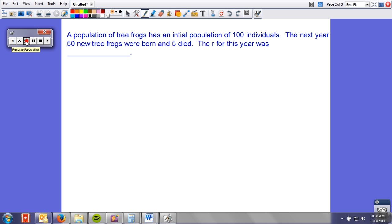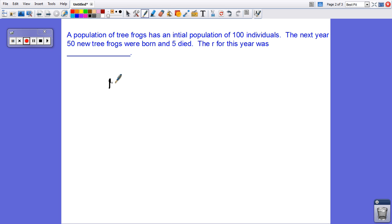Looking at this one, you have to account for things like deaths and births. So if we had 100 individuals, the next year we got 50 new ones, but five died. The R for that year was, so we got the next year we had, initially we had 100. We gained 50, but we lost five.